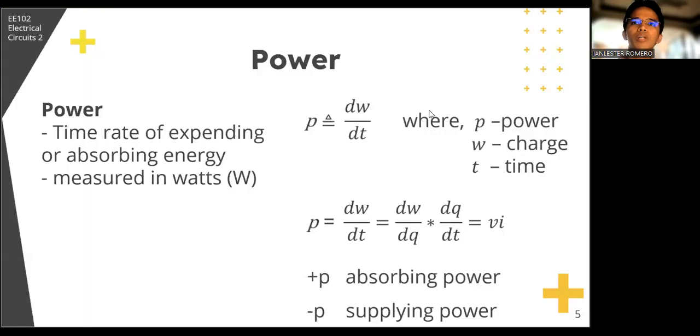Power is the time rate of expending or absorbing energy. That is, we can define p as dw over dt, where p is power, w is charge, t is time. Power is in watts, energy w is in joules, and t time is in seconds. If you are to solve this further, dw over dt can be expressed as dw over dq times dq over dt.